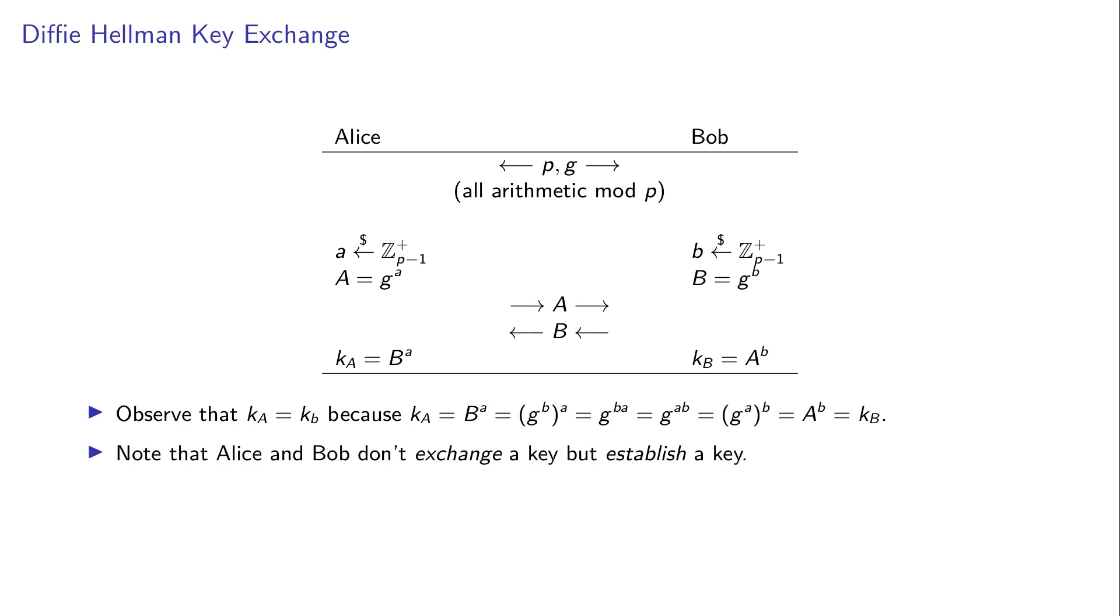Note that there isn't so much an exchange of a key, but there is an establishment of the key going on in this protocol. Now the adversary gets to see all the messages. So the adversary gets to see the prime p, the generator g, and the messages sent by Alice and by Bob. One thing, for instance, that the adversary can do is multiply the two messages. But in doing so, this will only give g to the power a plus b, whereas the value that the adversary is after is g to the power a times b. So this isn't really what the adversary needs.